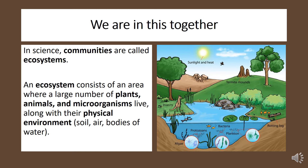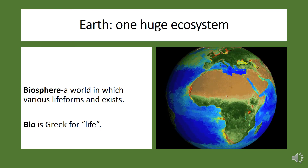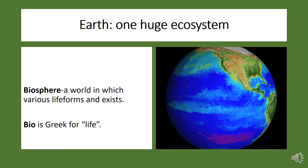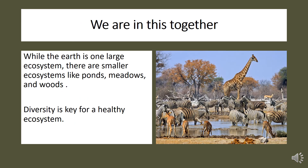In science, communities are equally important — these communities are called ecosystems. An ecosystem consists of an area where a large number of plants, animals, and microorganisms live along with their physical environment, which includes things like soil, air, and bodies of water. The earth is one massive ecosystem known as a biosphere — a world in which various life forms exist together. Within the biosphere there are smaller ecosystems like ponds, meadows, and woods, and for an ecosystem to be healthy there needs to be a lot of diversity within these smaller communities.